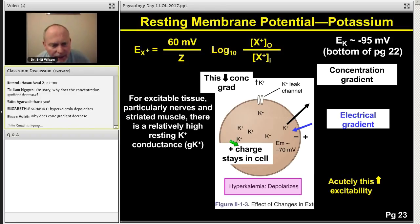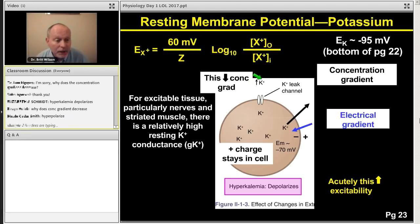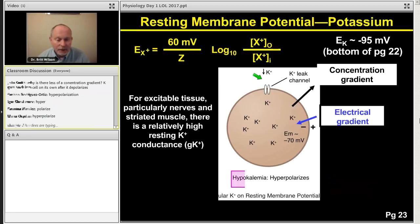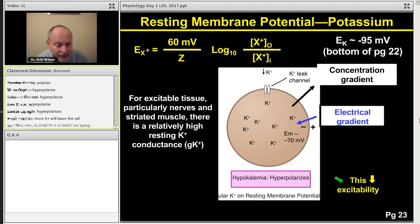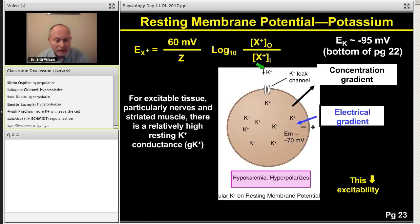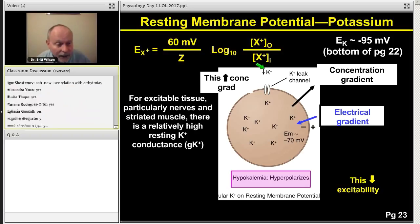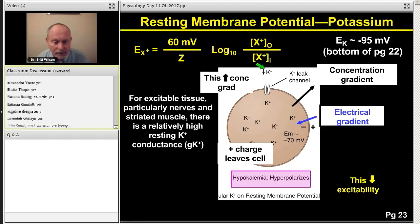So what do you think hypokalemia is going to do? Hyperkalemia, that's what we're starting with. It's going to hyperpolarize, exactly. So hypokalemia hyperpolarizes, which is going to reduce excitability. Do the exact same thing. If potassium is down outside the cell, there's a bigger concentration gradient. Do you agree? And if I got a bigger concentration gradient, positive charge leaves the cell hyperpolarized. That's the easy way to remember it.